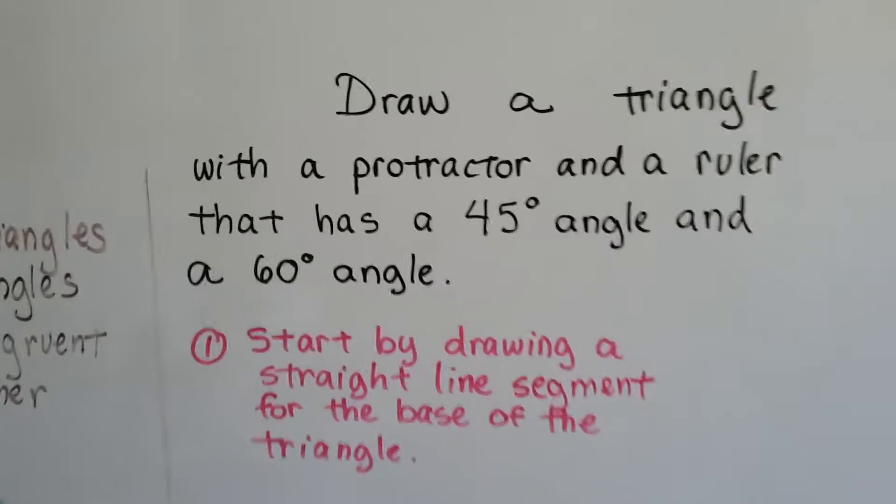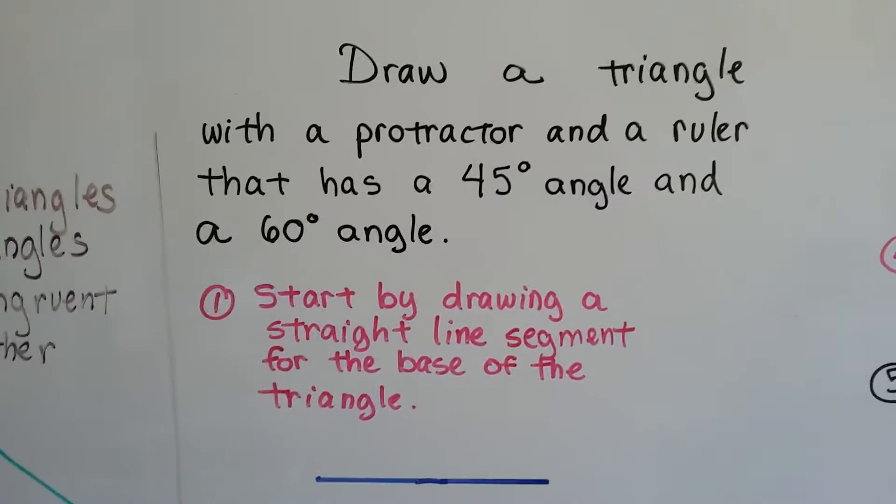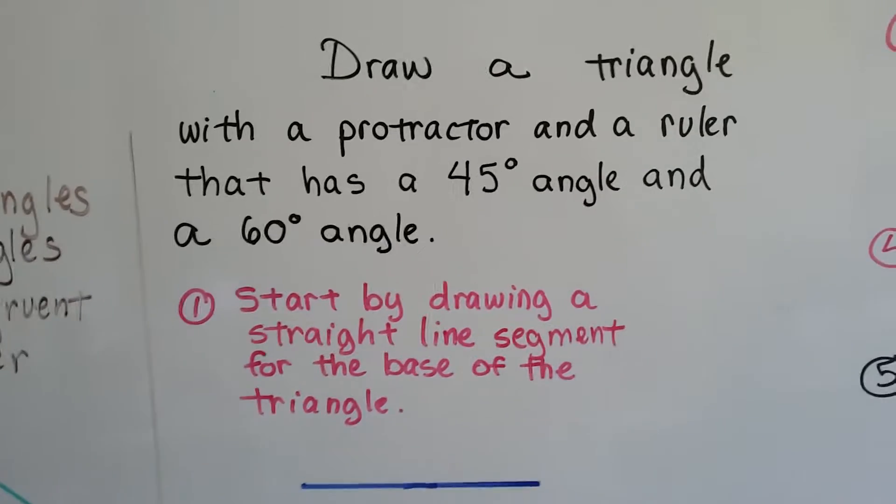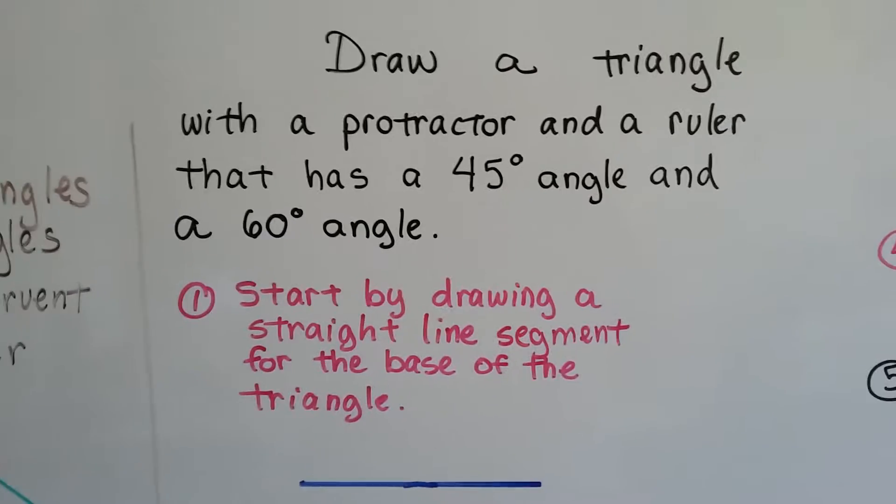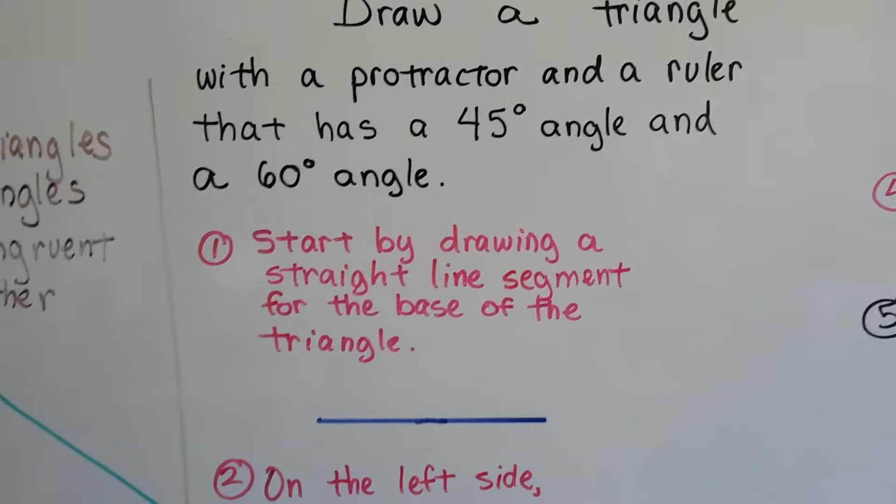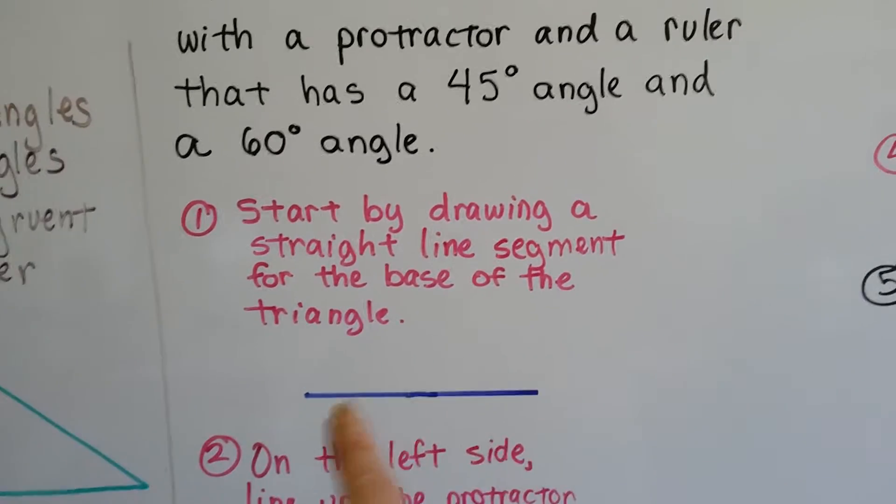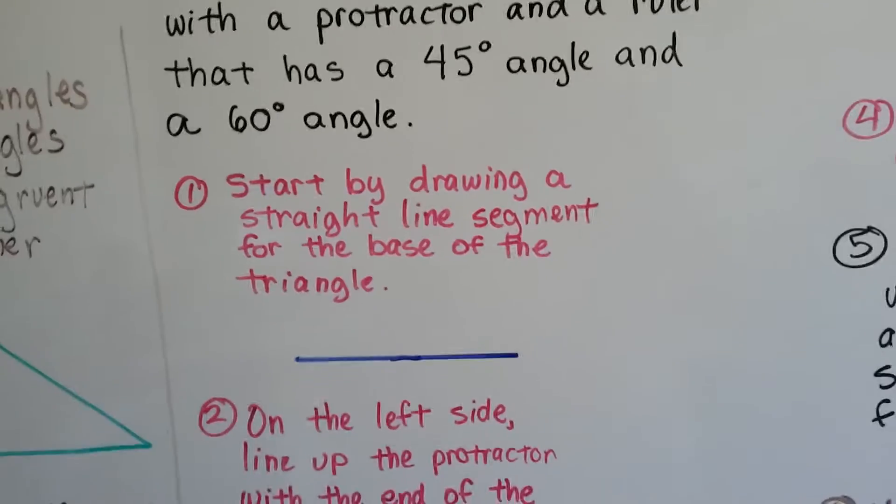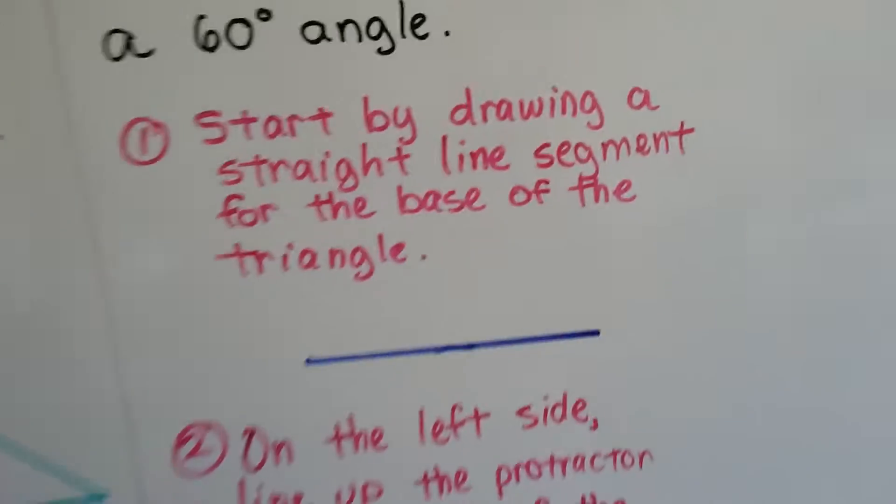So you might want to get a protractor for this and some paper if you want to follow along. Or you can just watch. We can draw a triangle with a protractor and a ruler that has a 45-degree angle and a 60-degree angle. We start by drawing a straight line segment for the base of the triangle. Mine is six inches long.